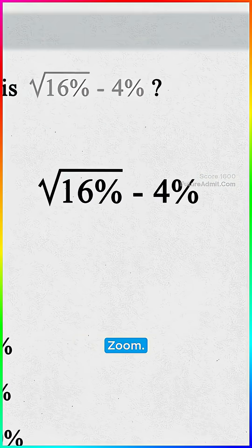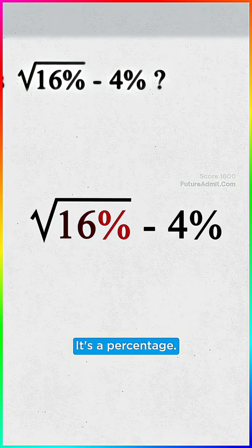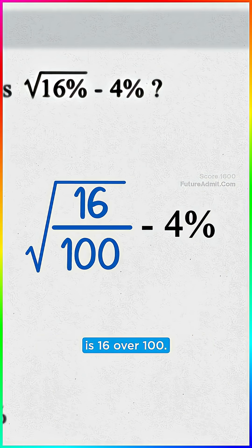It's A. But wait. Zoom. They tricked us. The number inside the root isn't 16. It's a percentage, and 16 percent as a number is 16 over 100.